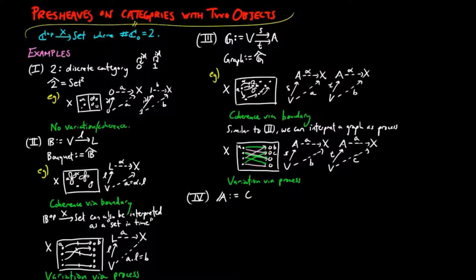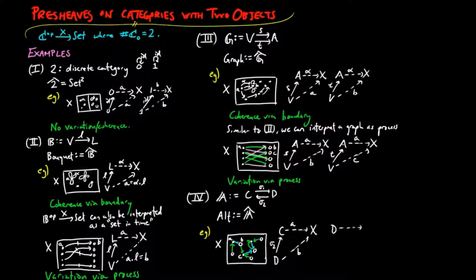If A is a category freely generated by two non-identity morphisms between the objects C and D, we can think of the category of pre-sheaves as alternating graphs, where a container X has two kinds of vertices, C and D, and a sigma-2 process from a C figure A to a D figure B, and a sigma-1 process from a D figure B to a C figure A.